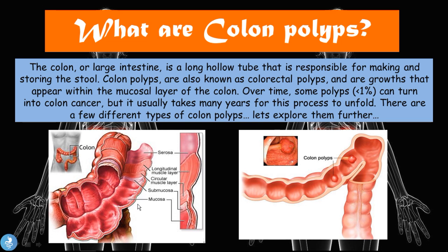The polyps, when they form, actually form in the innermost layer which is the mucosal layer. Seen here on colonoscopy, this is basically an artist's impression of what these colon polyps actually look like — masses or growths that appear within the mucosal layer of the large intestine.